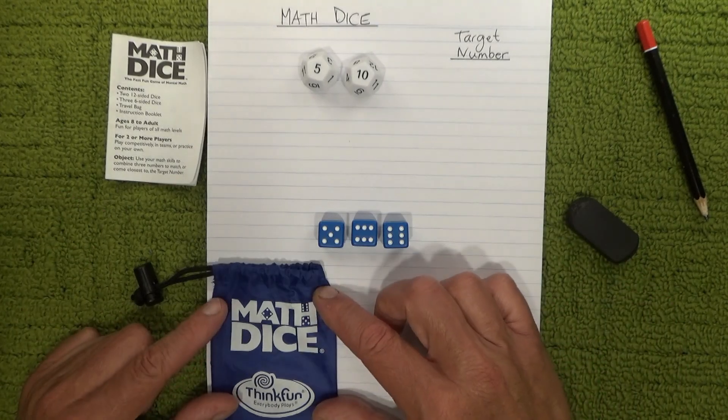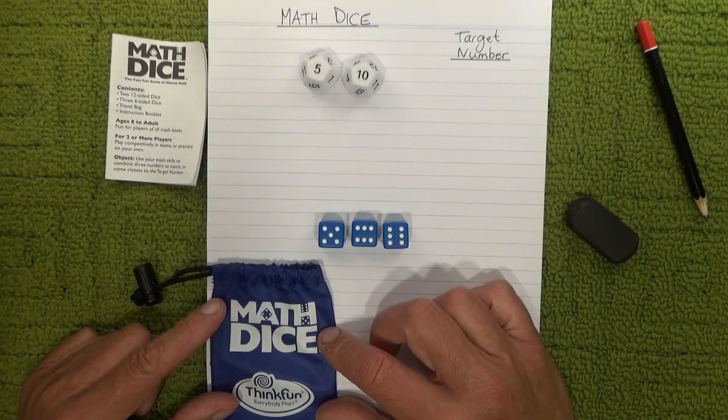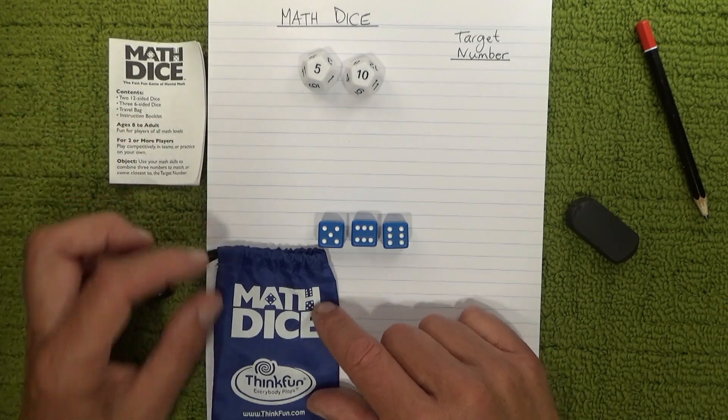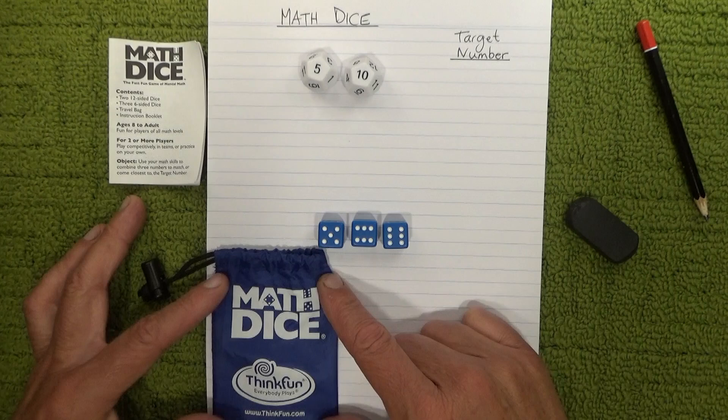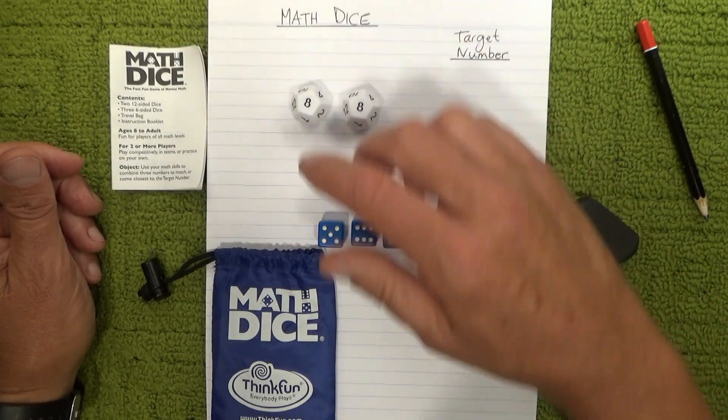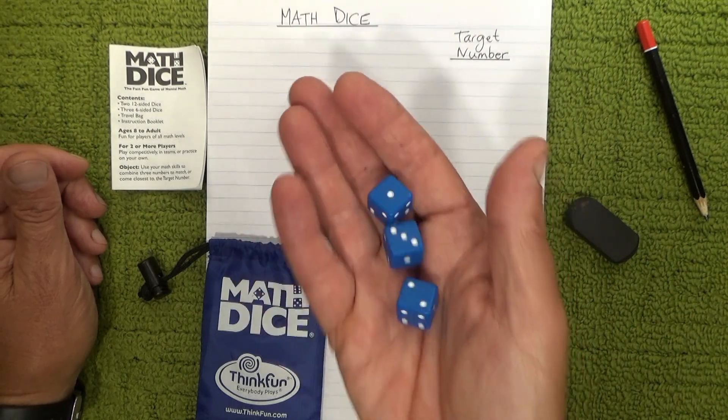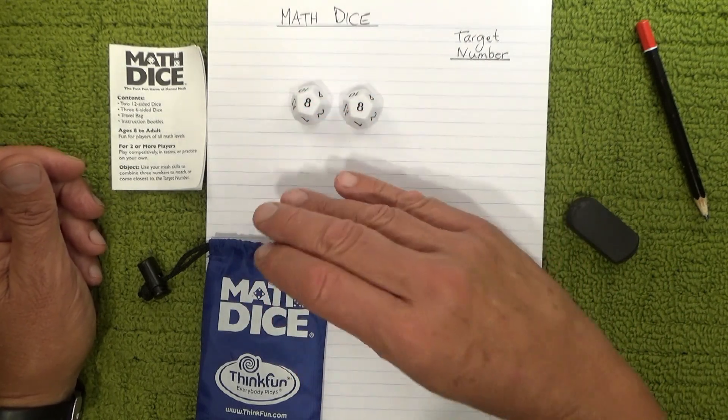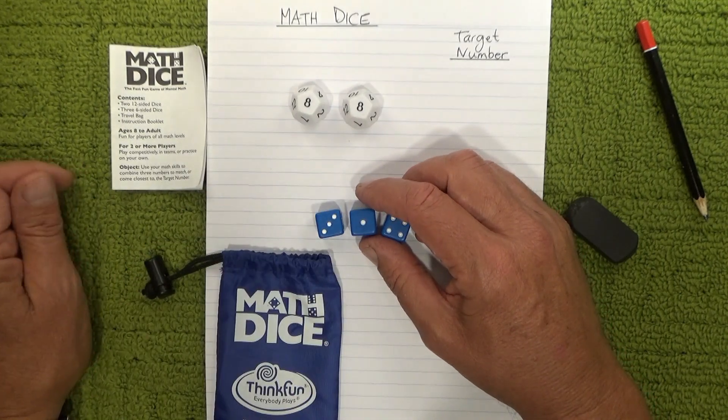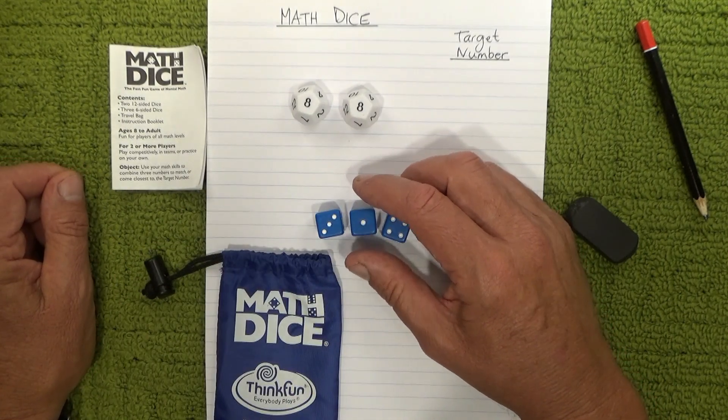Hello, today I'm going to show you this simple dice game called Math Dice. It comes in a little pouch like that with instructions, two 12-sided dice, and three regular six-sided dice. It's a game for, well you can play by yourself, but it's probably a game for two or more players.